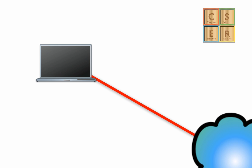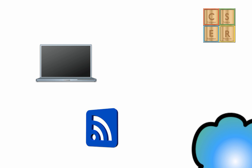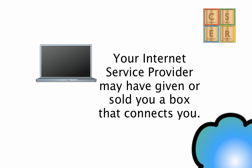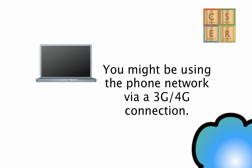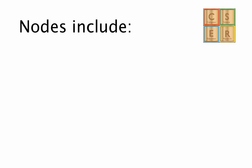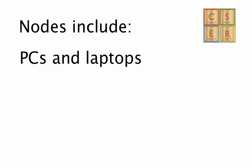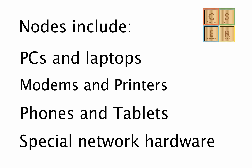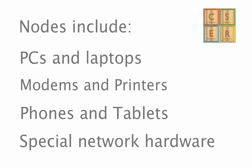Hopefully, most of you already know this because you've used the internet before. So you sit down with a machine and whether you're connected via Wi-Fi, which is wireless, or a cable, you can talk to the internet. This means that you've got some other device in your building, or your computer's been set up to work with some wireless technology that connects you to the internet. Just to recap: nodes include PCs and laptops, modems and printers, phones and tablets, and any special network hardware. Anything connected to the network is considered to be a node.